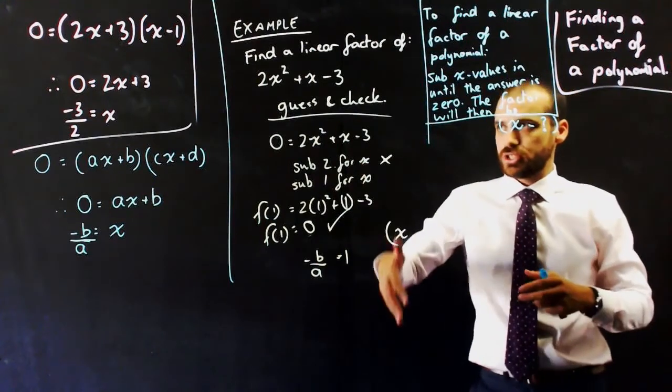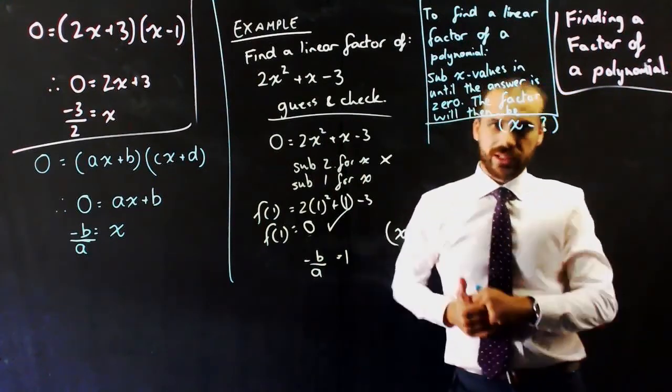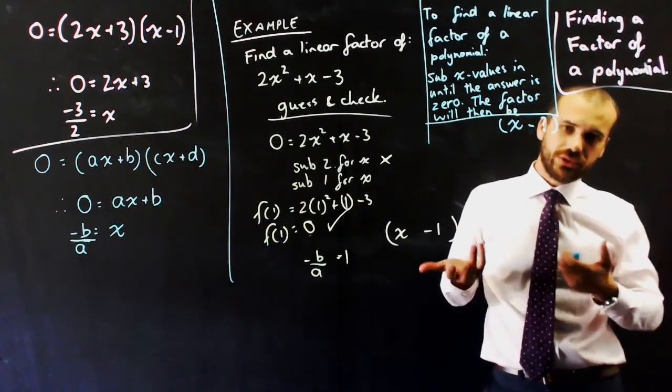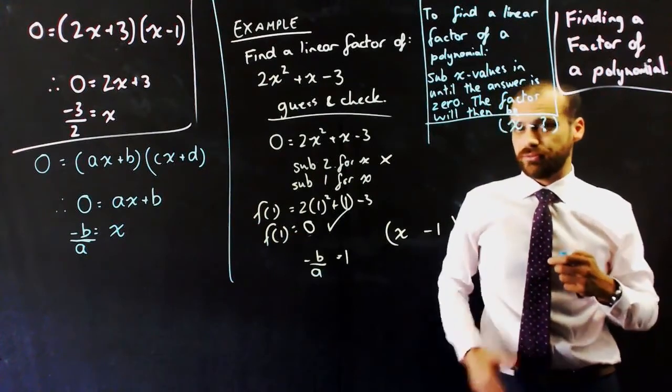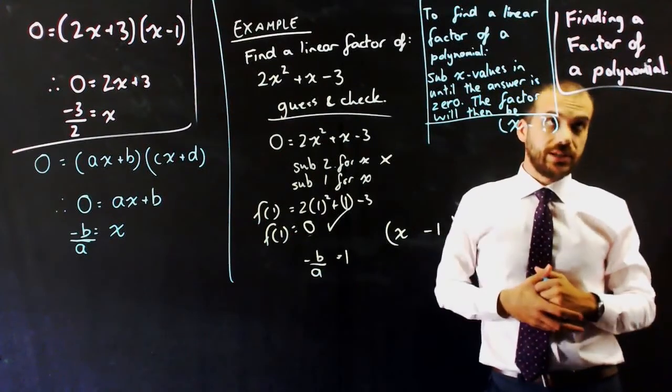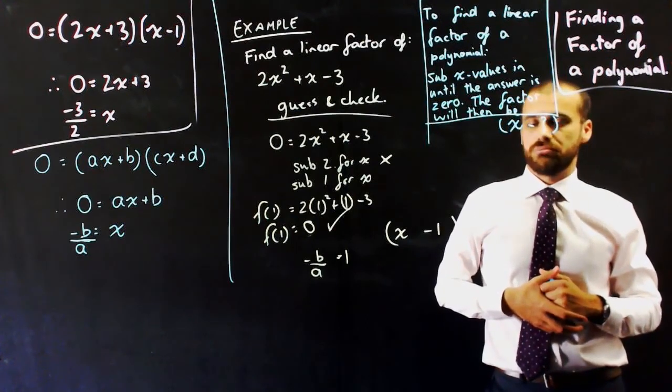Once you've sort of guessed and checked and found one linear factor, you can then go on and use that polynomial division to find the remaining factors. Or, yeah, that's a wrap.